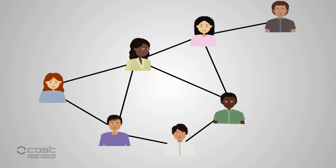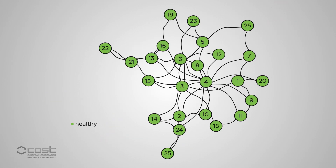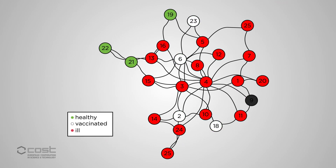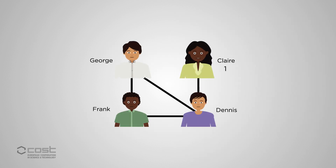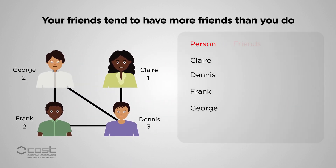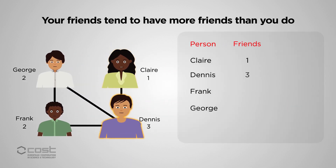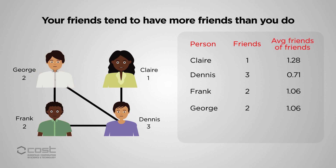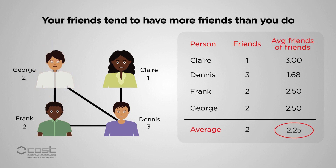But how can we identify who these hubs are? If we randomly vaccinate people, it's highly unlikely that we'll be successful. The friendship paradox says that on average, your friends have more friends than you do. This is because if we pick a random person and ask them to name a friend, they're more likely to name someone who knows lots of people, rather than someone who only knows one or two people.